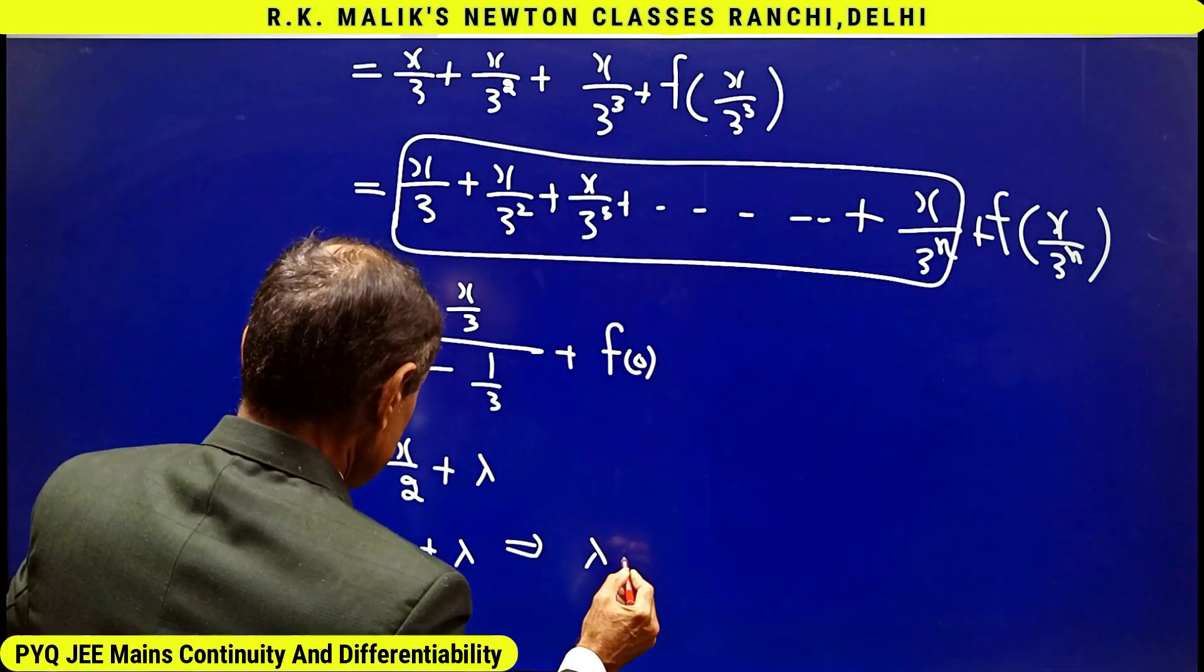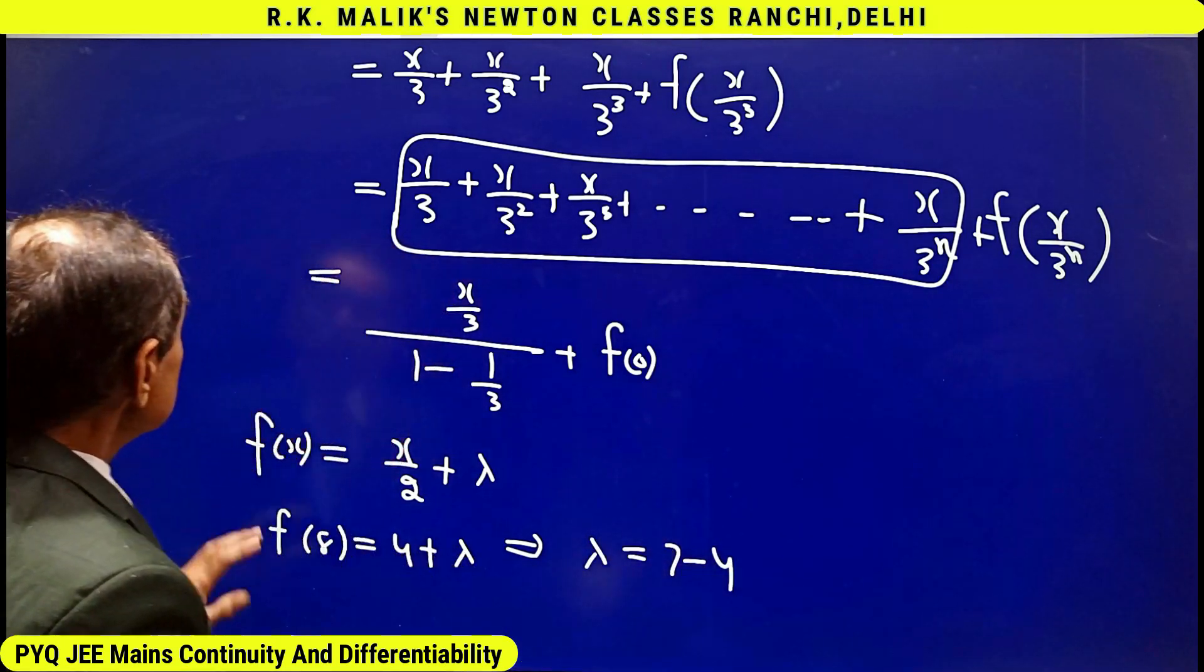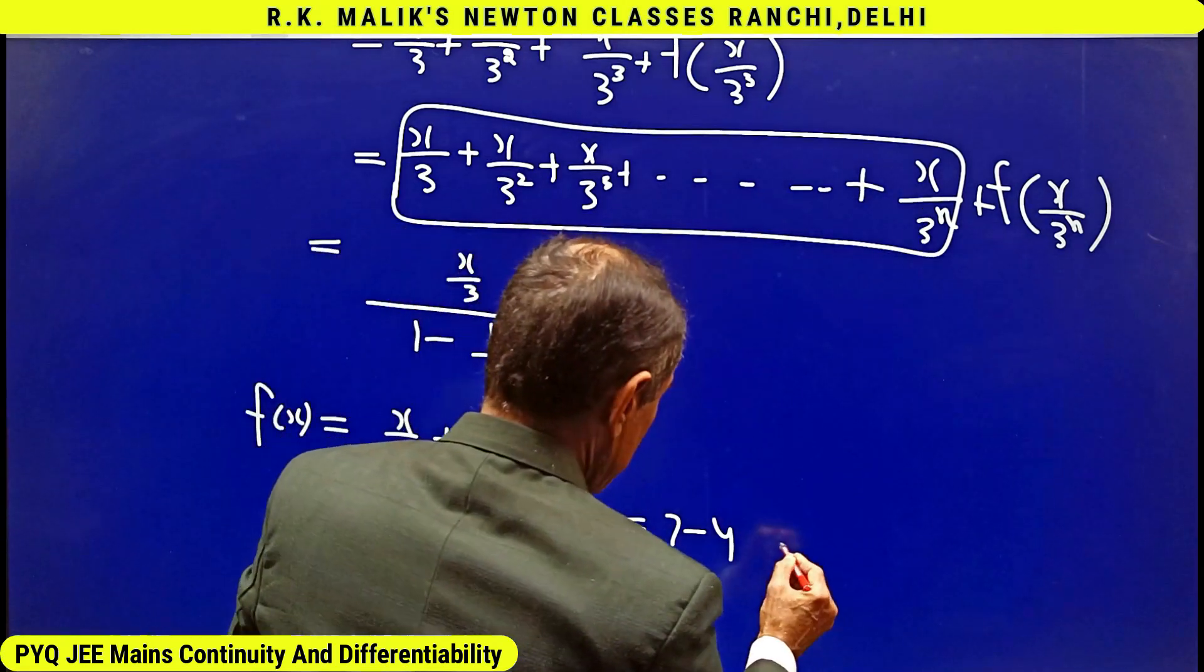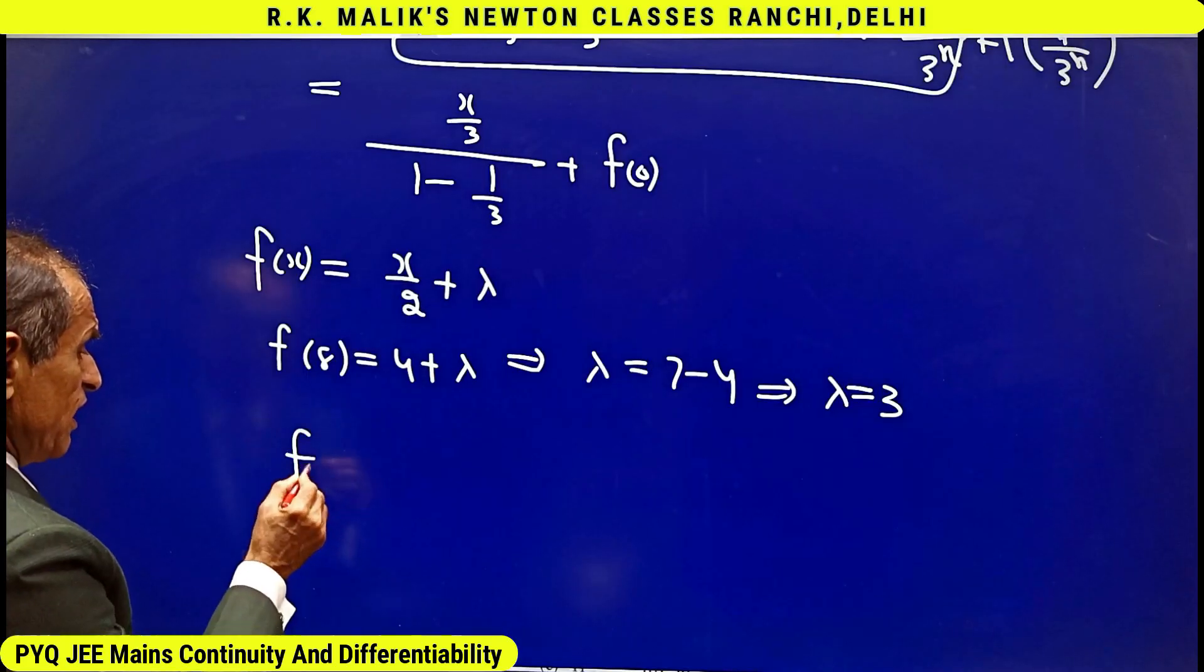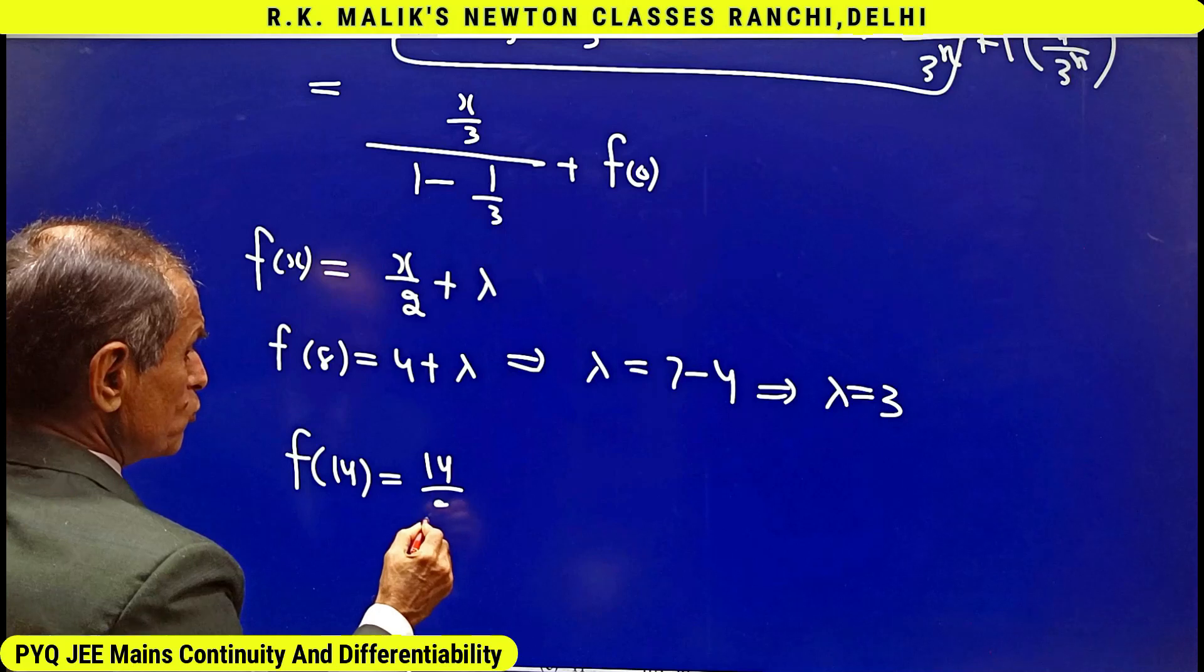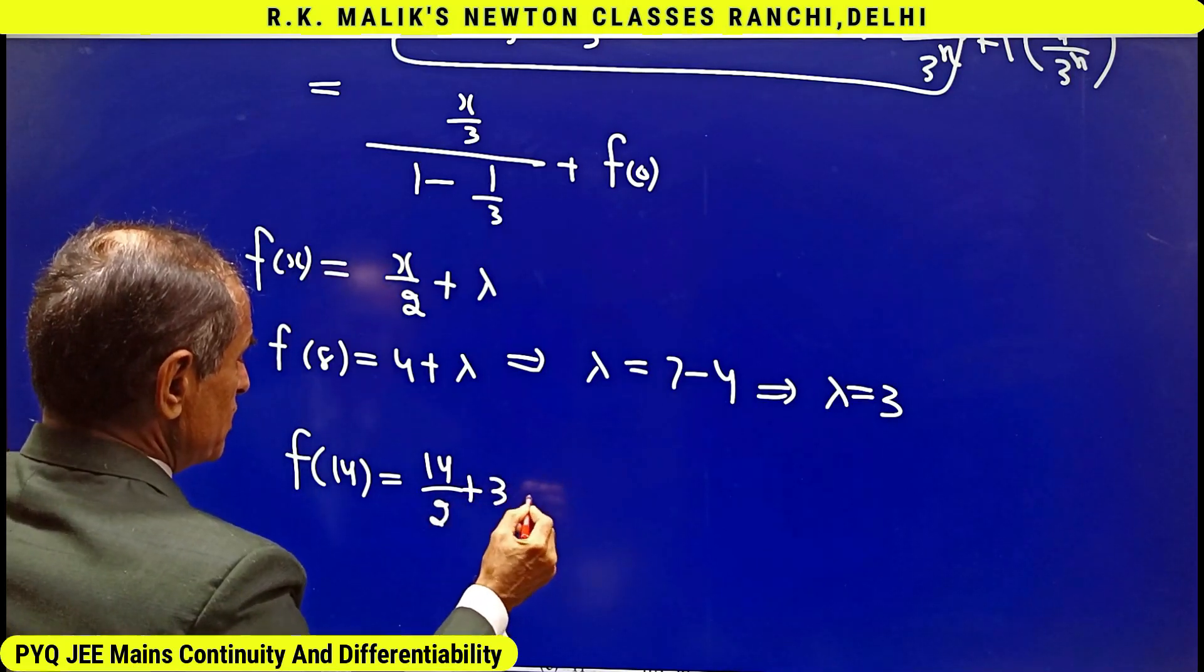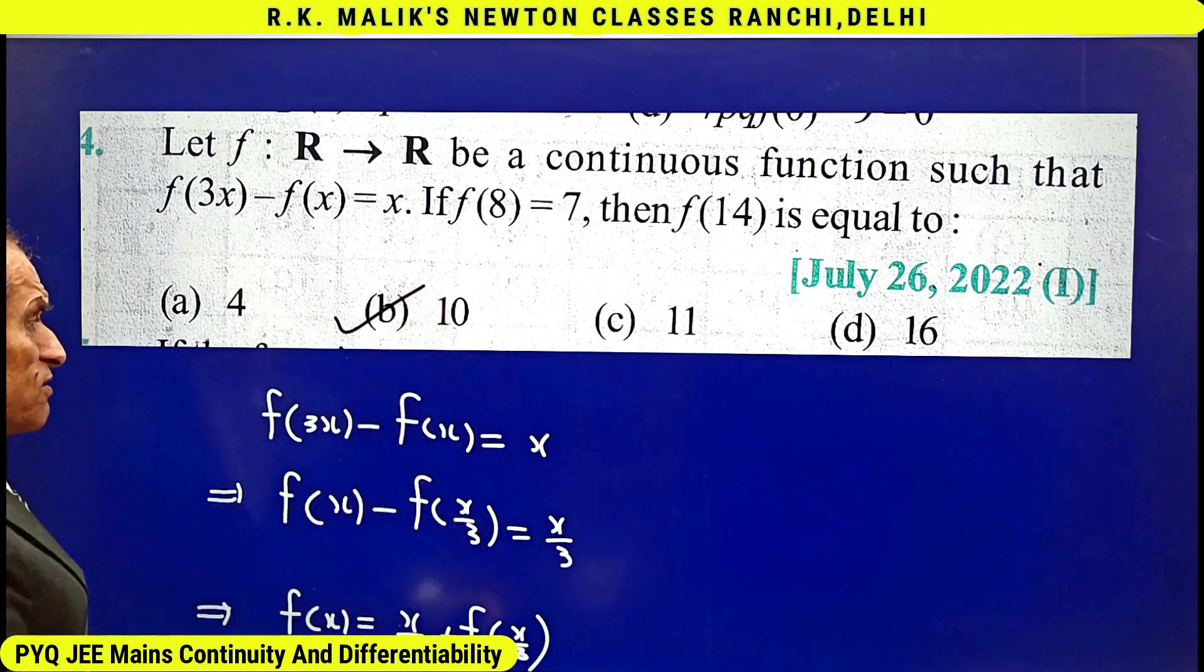And because the value of f(8) is given to you as 7, putting x = 8 will get the value of λ. That is f(8) = 4 + λ, that is λ = 7 - 4 = 3. Hence I get f(14) = 14/2 + 3 = 10. Hence the correct choice is b.